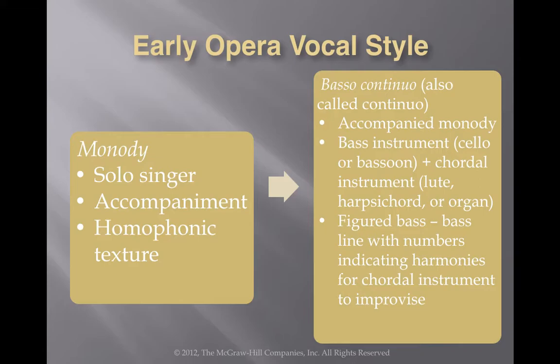The accompaniment often used is called basso continuo. Basso continuo was a form of shorthand music writing that a composer would use to tell a musician what the bass note of the chord they were playing would be, as well as how to play the chord for that particular part of the music. This style often required two different musicians to play the accompaniment — one of those instruments would be a bass instrument, often a cello or a bassoon, something that could play the bass note by itself.